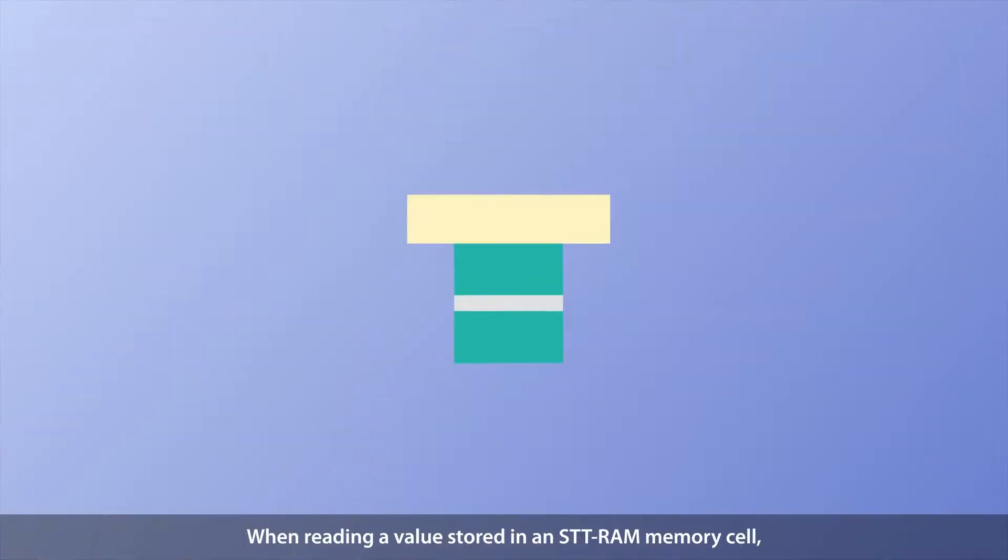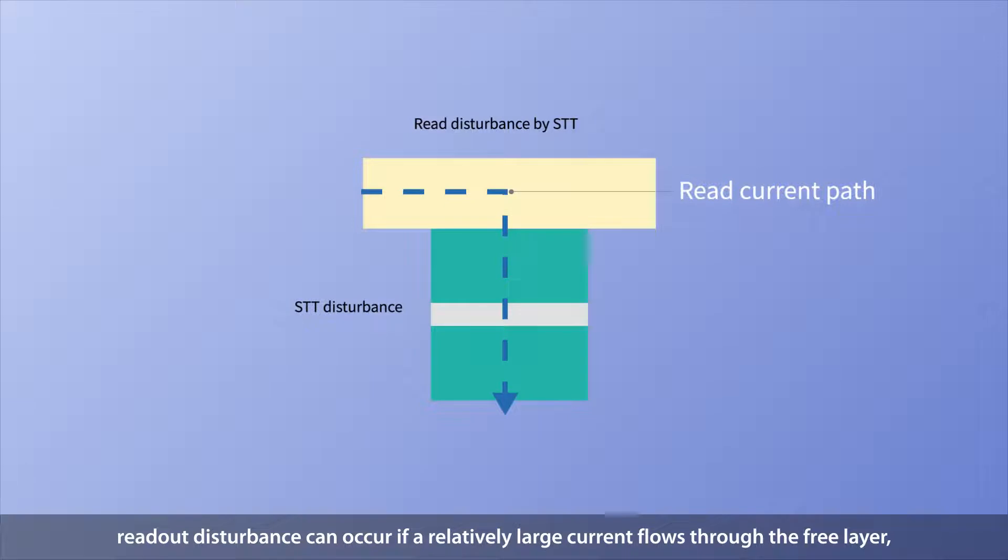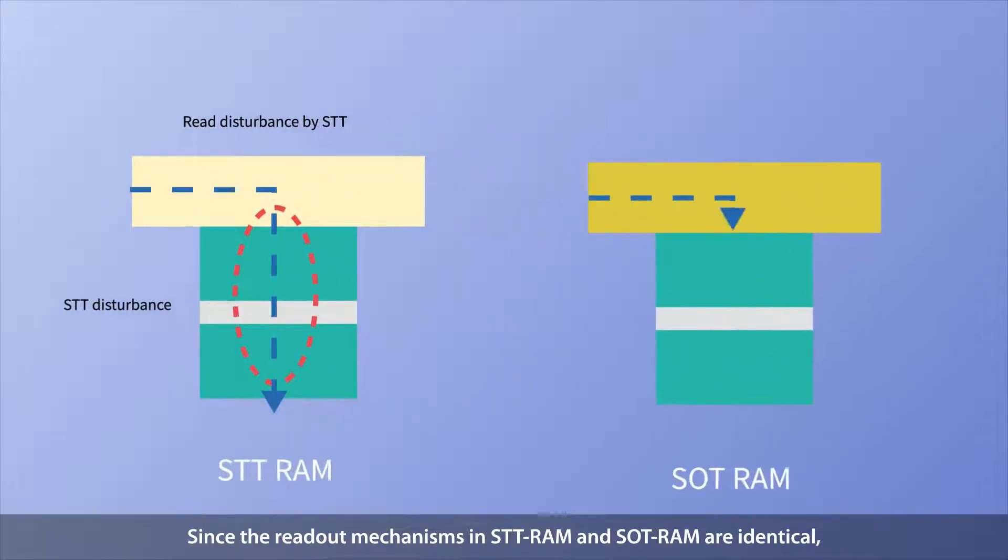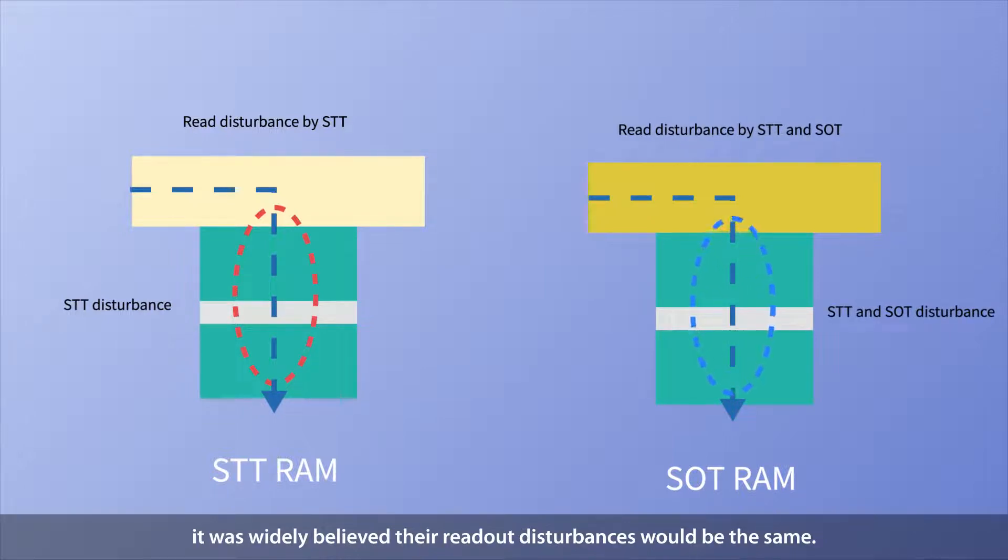When reading a value stored in an STT RAM memory cell, readout disturbance can occur if a relatively large current flows through the free layer, unintentionally flipping the stored value. Since the readout mechanisms in STT RAM and SOT RAM are identical, it was widely believed that readout disturbances would be the same.